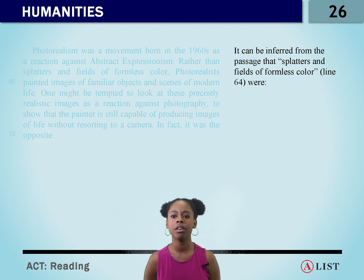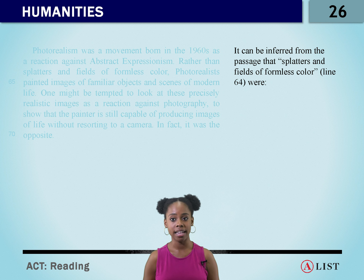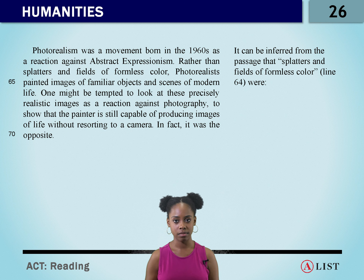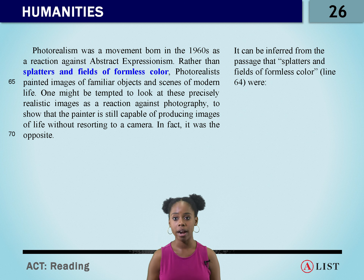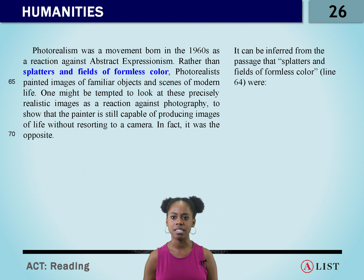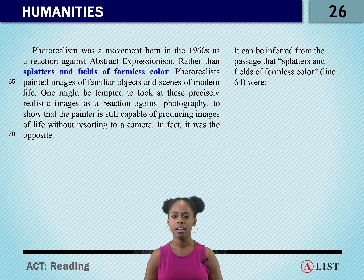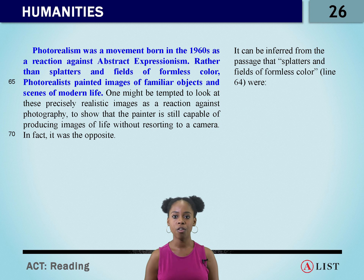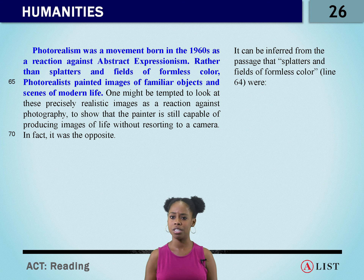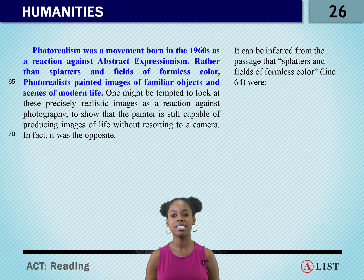Question 26. It can be inferred from the passage that splatters and fields of formless color, line 64, were... Let's look at line 64. Rather than splatters and fields of formless color, photorealists painted images of familiar objects and scenes of modern life. That doesn't really give us a lot of context, so let's go back one sentence. Photorealism was a movement born in the 1960s as a reaction against abstract expressionism. Rather than splatters and fields of formless color, photorealists painted images of familiar objects and scenes of modern life.